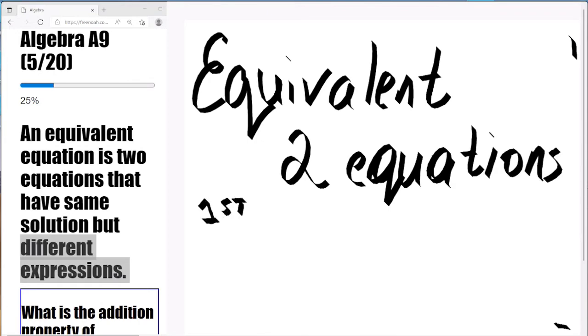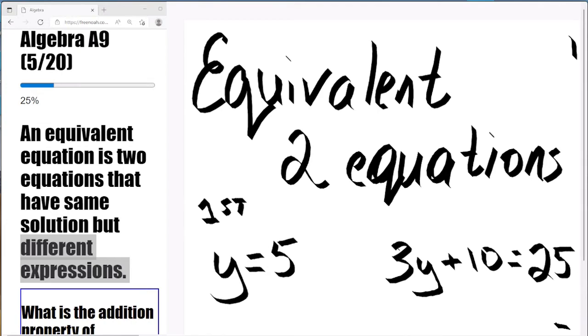So now we have two equations, they're going to have equal signs. The first one is going to be y equals 5. The second equation is going to be 3y plus 10 equals 25, right?